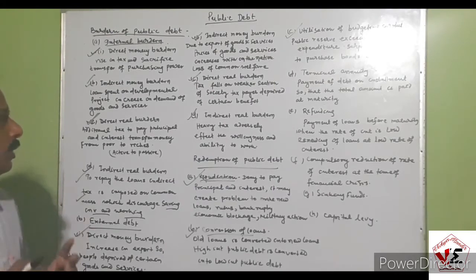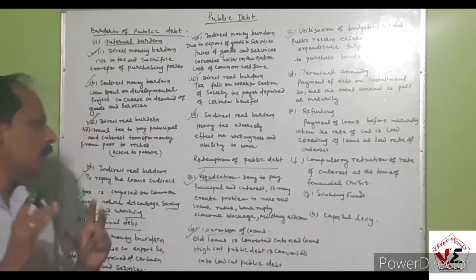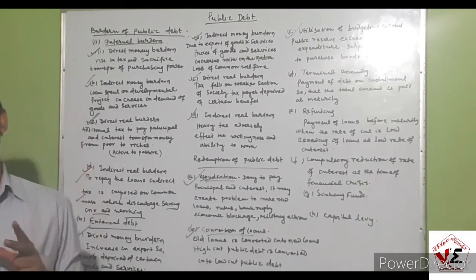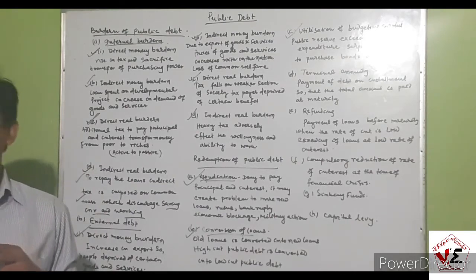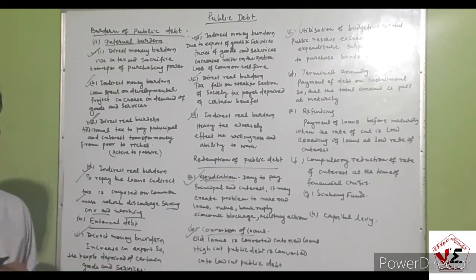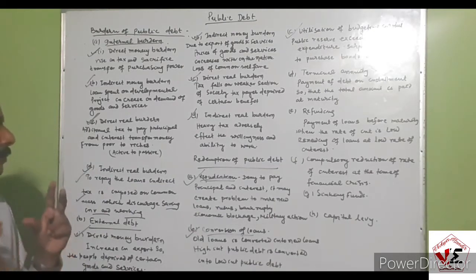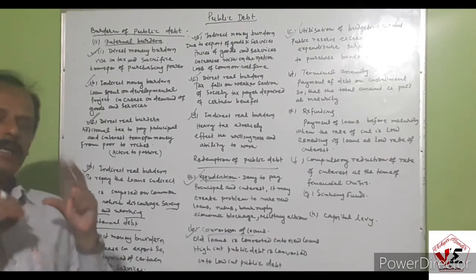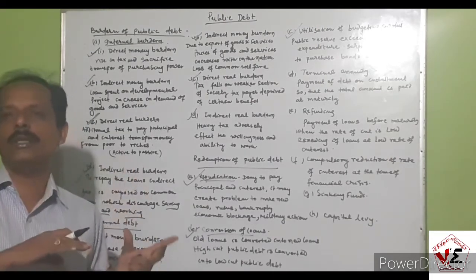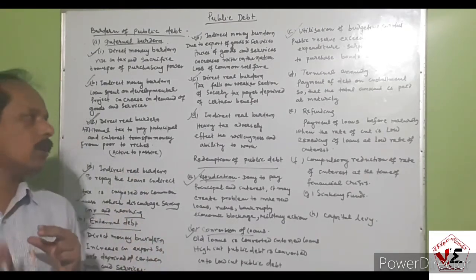Another method is refunding — the payment of a loan before its maturity. When the rate of interest is very low, the government pays the loan before maturity, so there is less burden on the economy.